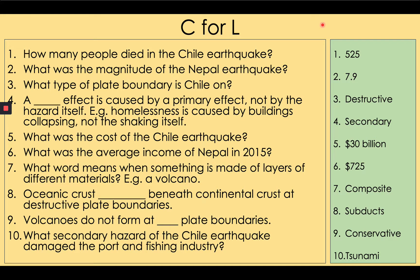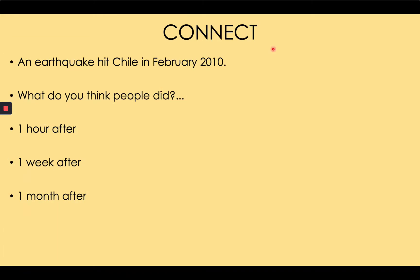To introduce the idea of hazard responses, I'm going to ask you to consider how Chile responded at different times after the earthquake — one hour after, one week after, one month after. So an hour after, what kinds of things would Chileans have done? They'd be looking for survivors, running out of buildings, calling friends and family. The government would be organizing its response. The police would be in the streets working with ambulance services to find anyone injured. That's the immediate priority.